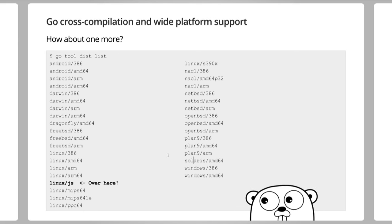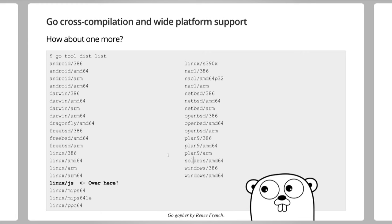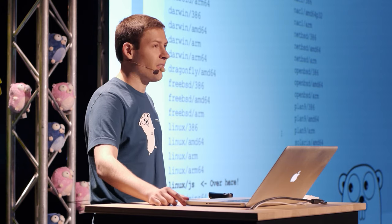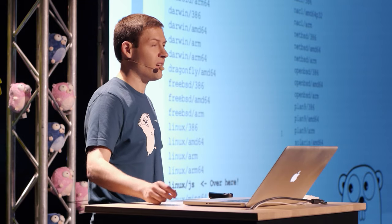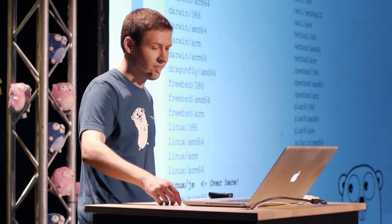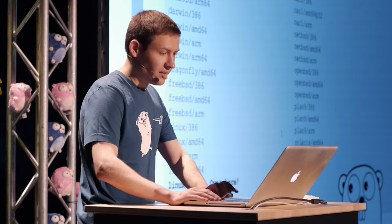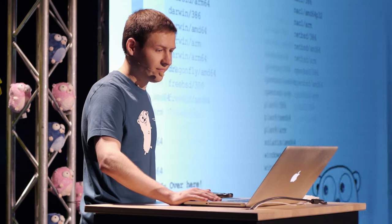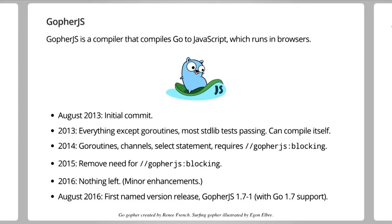This curious gopher really wants to jump in the browser — he's very eager. So what would it feel like to think of the browser effectively as an operating system that we want to target? Luckily, we can have a little bit of an answer to that. So GopherJS — it's a compiler that takes Go code and compiles it to JavaScript, which then runs in the browser.